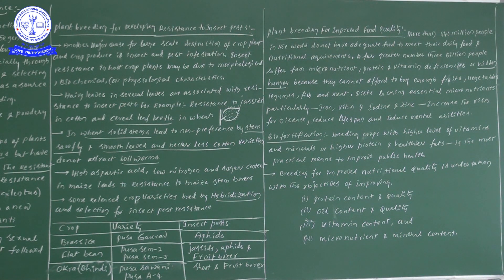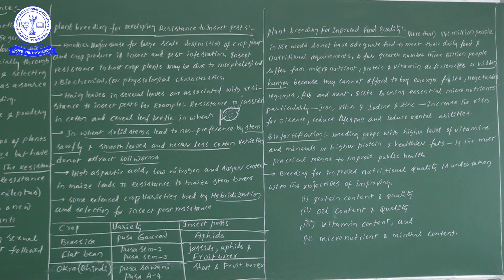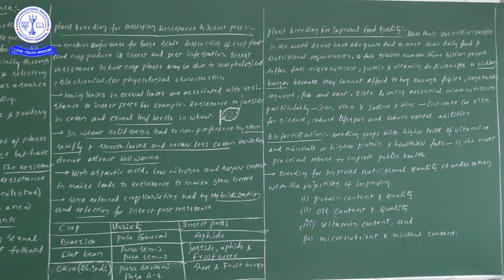In this video, the information covered includes plant breeding for disease resistance — specifically mutational breeding — plant breeding for developing resistance to insect pests, and plant breeding for improved food quality. For improved food quality, some information still needs to be covered due to lack of board space — it will be explained in the next video. Thank you, students. Watch this video.